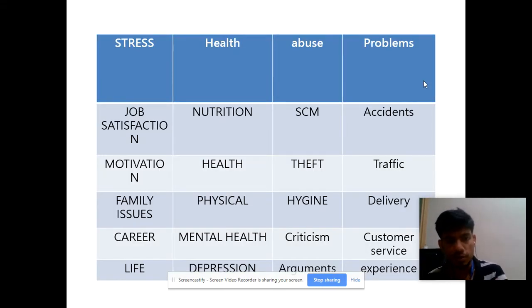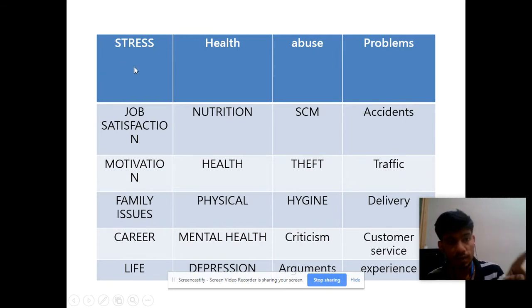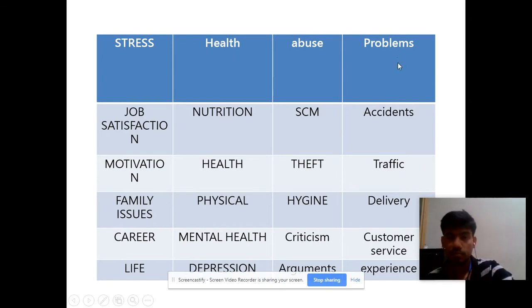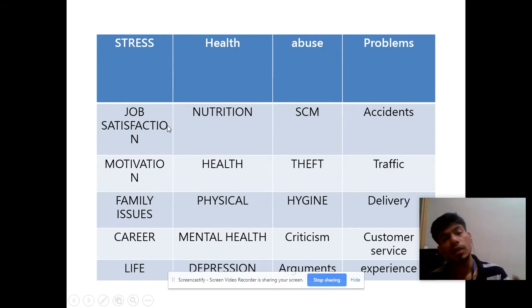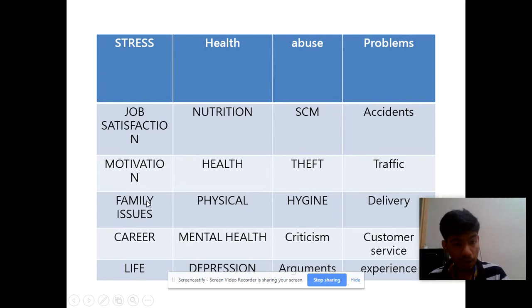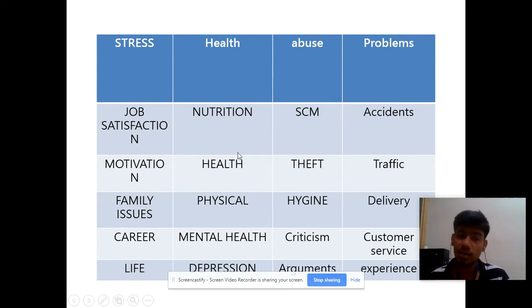I've constructed a table which you can see on the screen. These delivery boys experience stress at the end of the day — their health is spoiled, they get physically abused or mentally abused, and it leads to a lot of problems. Under stress, the different aspects I can connect include job satisfaction, motivation, family issues, career progression, and life lessons. Under health, they are physically and mentally spoiled.